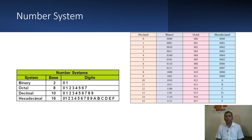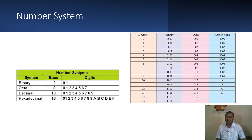When we talk about microprocessors, we also need to know basic information about the number system. The number systems we have already studied are binary, octal, decimal, and hexadecimal. These number representation and data representation methods are used by the microprocessor. In binary, decimal 0 is represented as 0000, octal also as 00000, and hexadecimal as 0000.